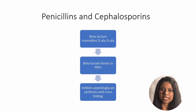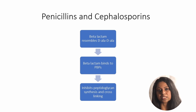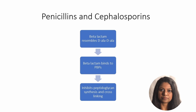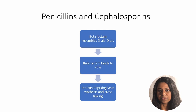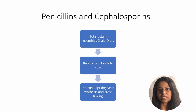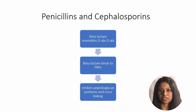Penicillin also inhibits the function of transpeptidases, which inhibits cross-linking of the bacterial cell wall. Some patients may develop severe allergic reactions to penicillin, and some of them may have anaphylaxis. Cephalosporins and penicillins share a cross-reactivity of about one to five percent for severe allergic reactions.